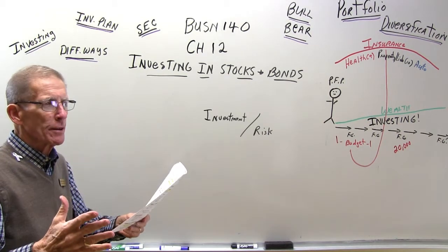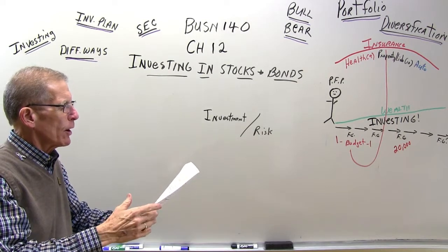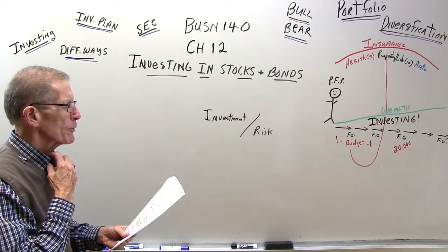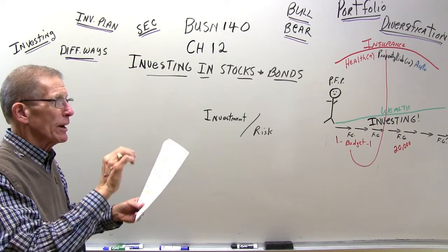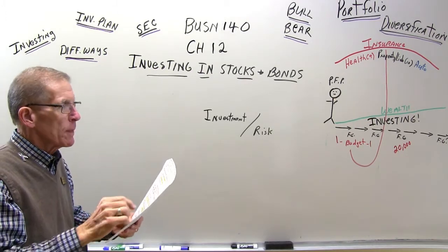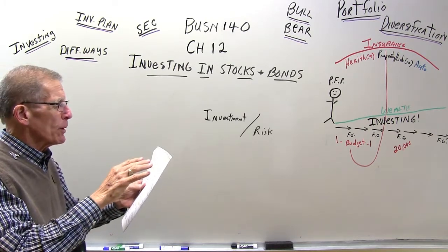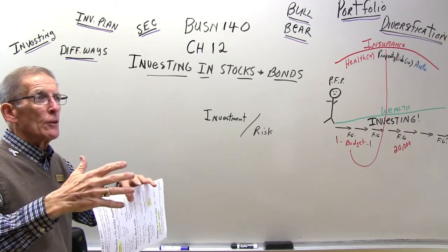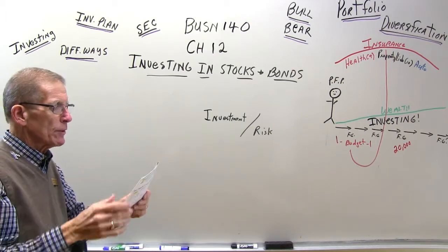Stocks are ownership in companies — you could go out and buy ownership in Walmart or Centrelink. There are several risks involved with purchasing stock. Business risk means the risk that the company you bought stock in will continue to have earnings and continue to make a profit — the risk that the business has simply by being in business. Financial risk means businesses must be careful that their debt is not greater than their equity; if debt gets too high, it creates problems for investors.